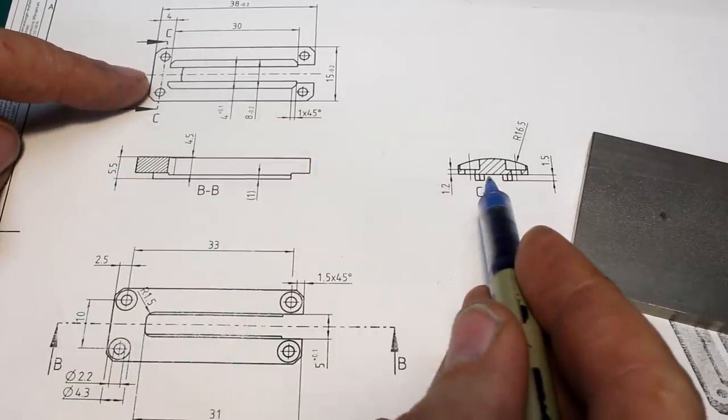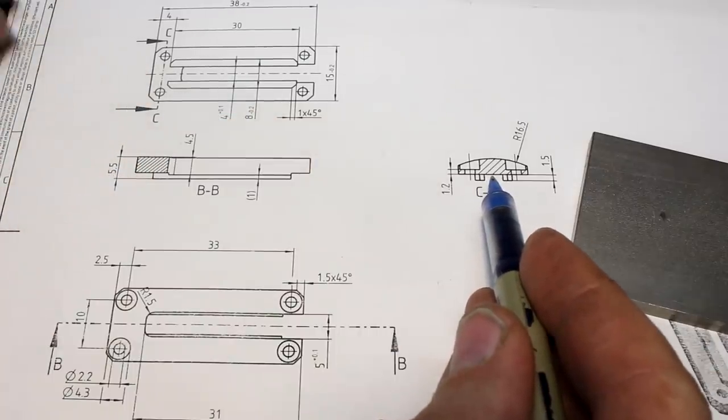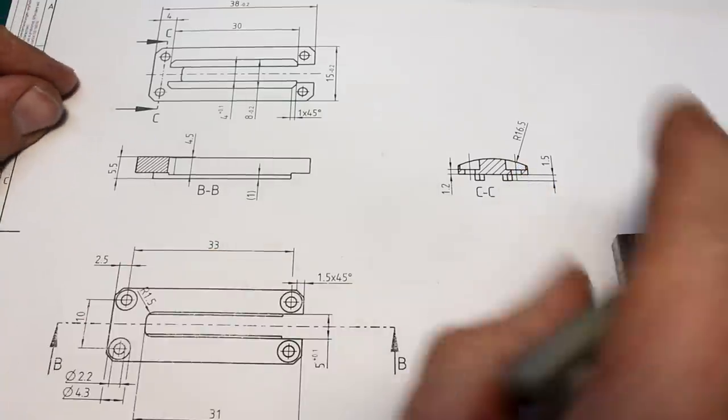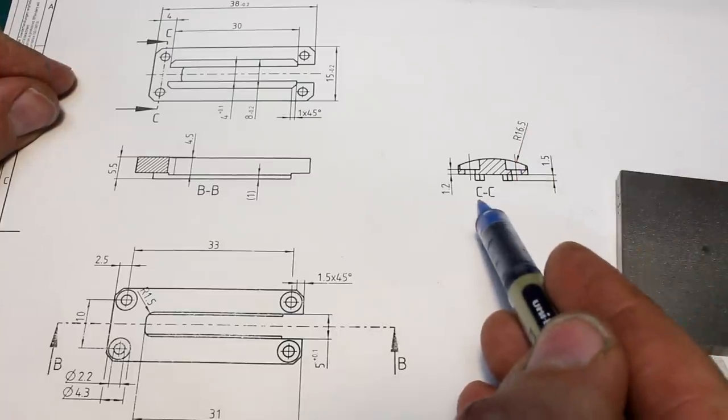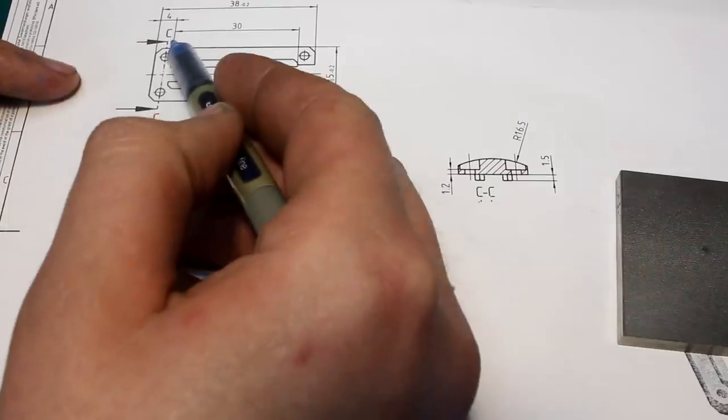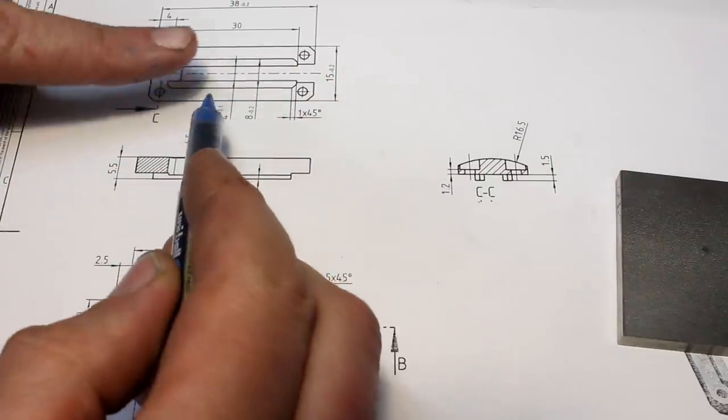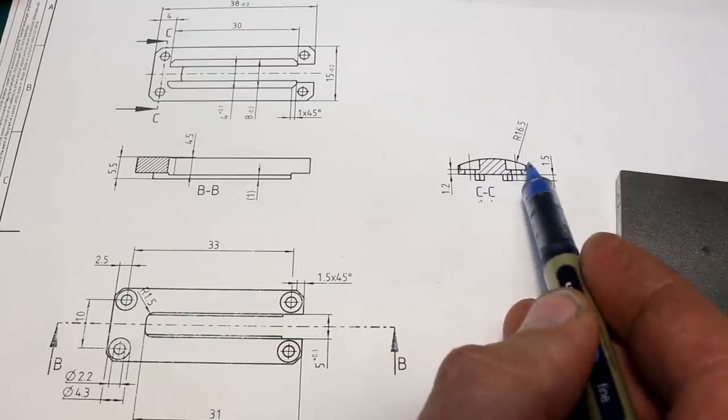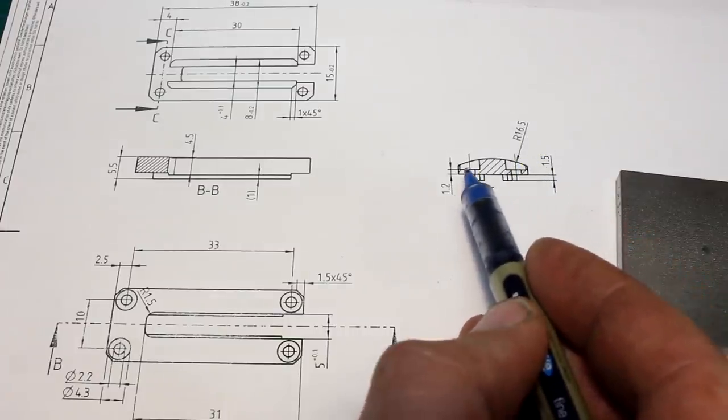Also, we have a section view through here, cut CC. That's this one here, cutting all the way through and looking against from this direction. Gives us this arched top surface with a radius of 16.5.